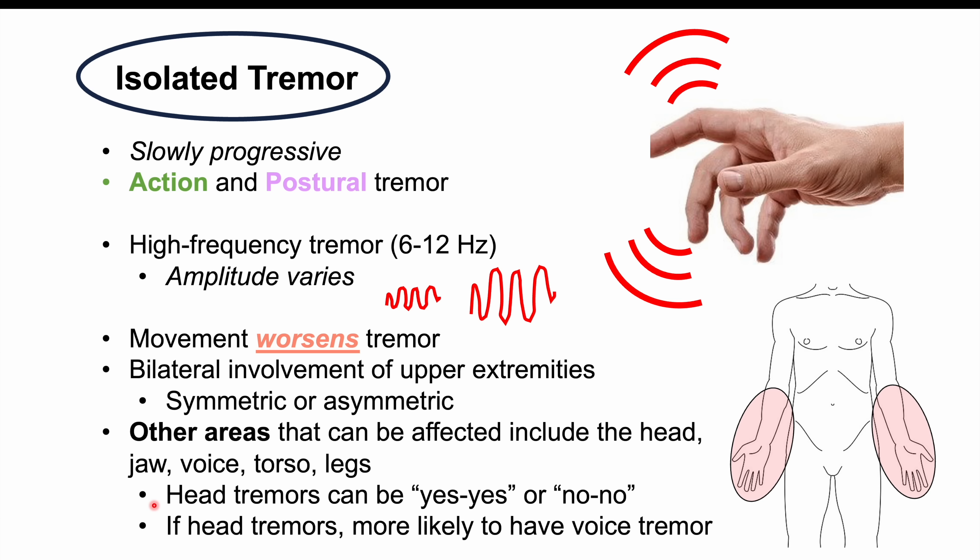For essential tremor, there is generally no resting tremor — the tremor occurs with action or in a postural manner, and because it is an action tremor, it can worsen with movement. This differs from Parkinson's disease, where there is a resting tremor and the tremor improves with action. There are also no issues with reflexes in essential tremor and no rigidity, both of which are seen in Parkinson's disease.